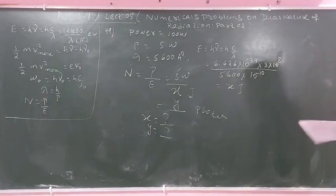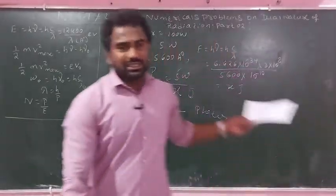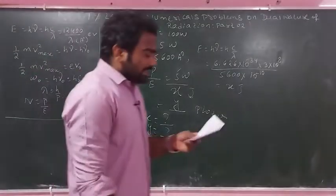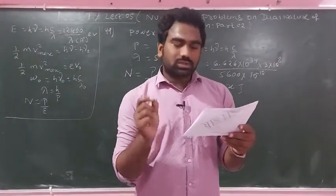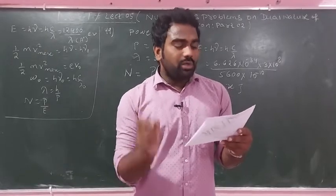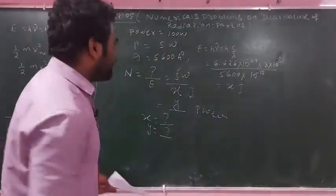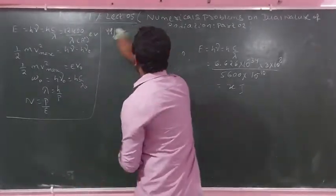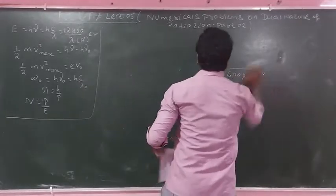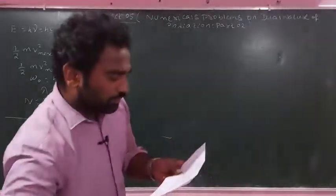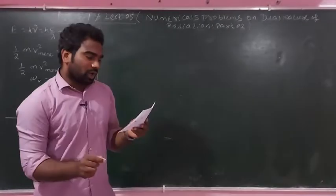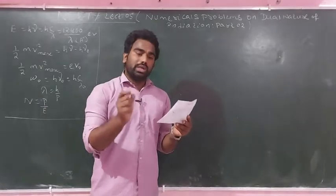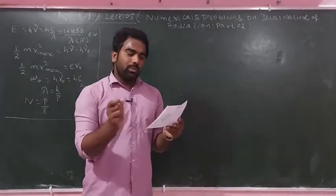Question number 50. Energy from the sun is received on the earth at the rate of 2 calories per minute per centimetre square. This is a very important and practical real-life question.